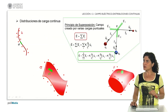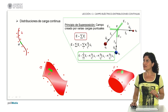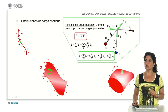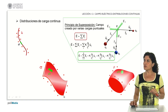Previously, when analyzing a discrete system, we saw that to calculate the electric field at a given point we added vectorially the contributions of each of the charged particles. We have the general algebraic expression, and in the particular case developed here, we consider a longitudinal distribution, a surface distribution, or a volumetric distribution.